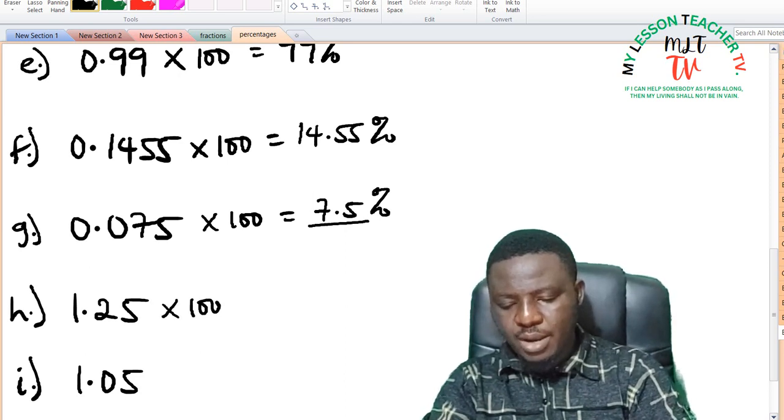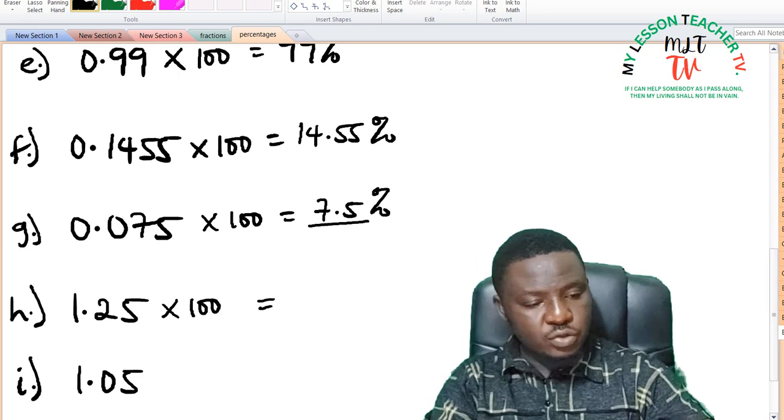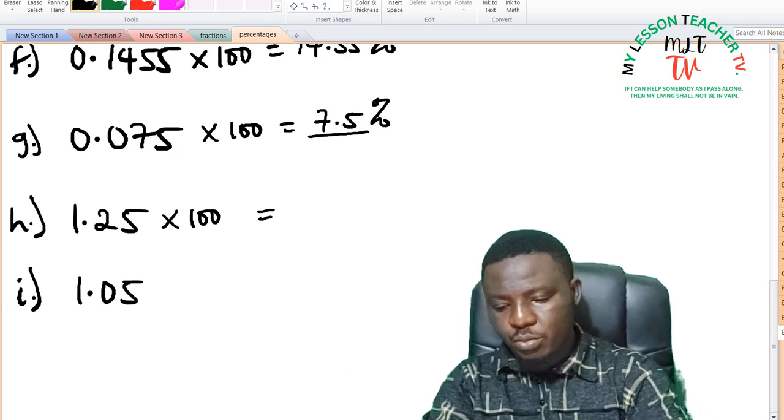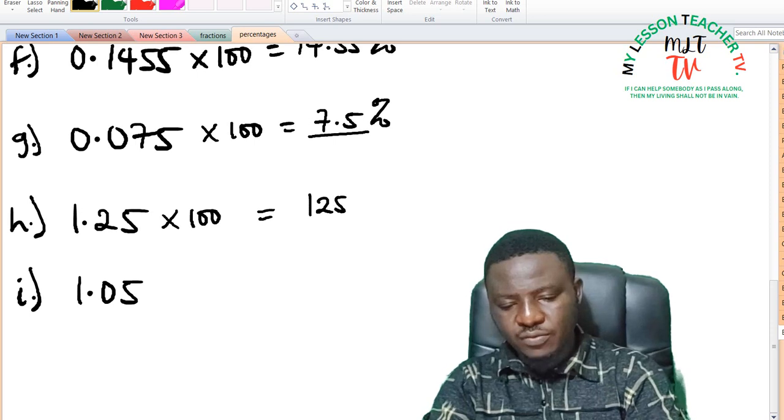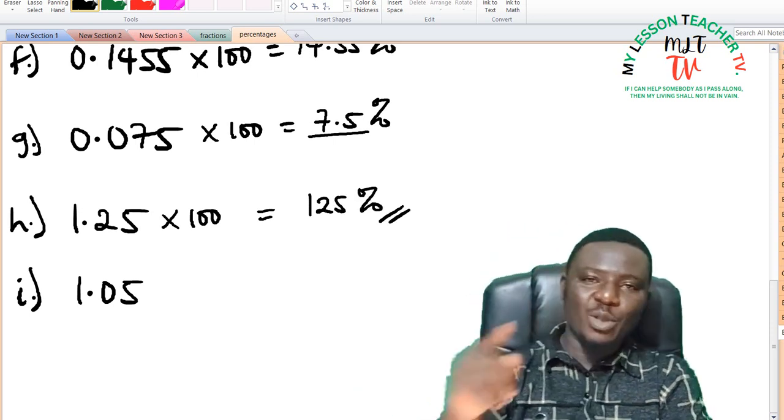H, you multiply by 100. When you move the decimal point 2 times, it gives you 125%. And for I,